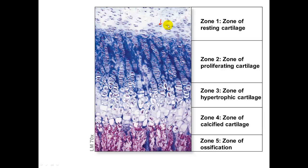The chondrocytes in Zone 1 contribute to Zone 2, the zone of proliferating cartilage, which is one of the zones in which interstitial growth occurs. Here, chondrocytes undergo rapid mitotic division and become aligned into columns parallel to the diaphysis, so they are growing in one direction.